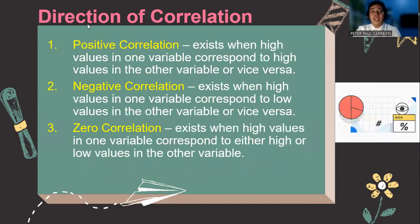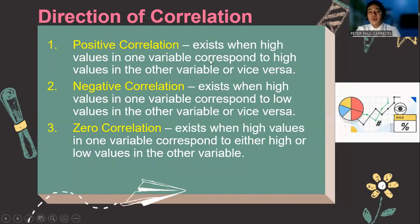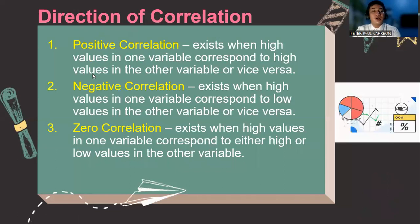When we talk about the direction of correlation, we have three. We say that a positive correlation exists when the high values of one variable corresponds to the high values in the other variable. Vice versa, when the low values in one variable corresponds to the low values in the other variable, then that is positive correlation.